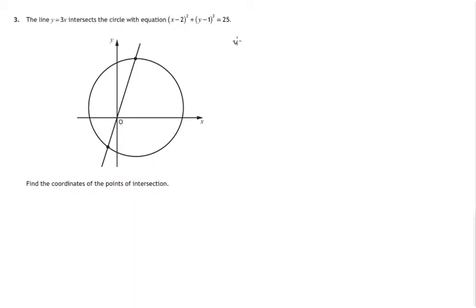We look at the two equations: y equals 3x, and (x minus 2) squared plus (y minus 1) squared equals 25. Both of these statements have to be true. In particular, looking at y equals 3x, we can replace the y in the circle equation by 3x, and that leaves us with an equation with only x in it.